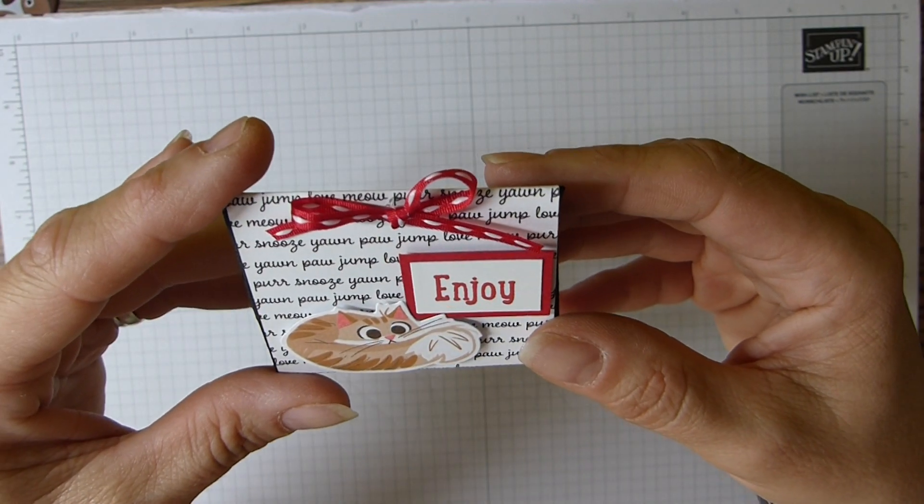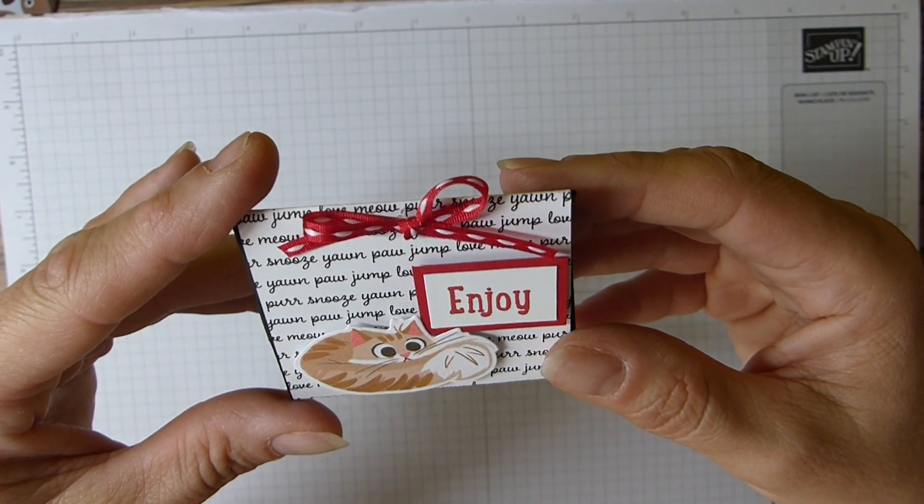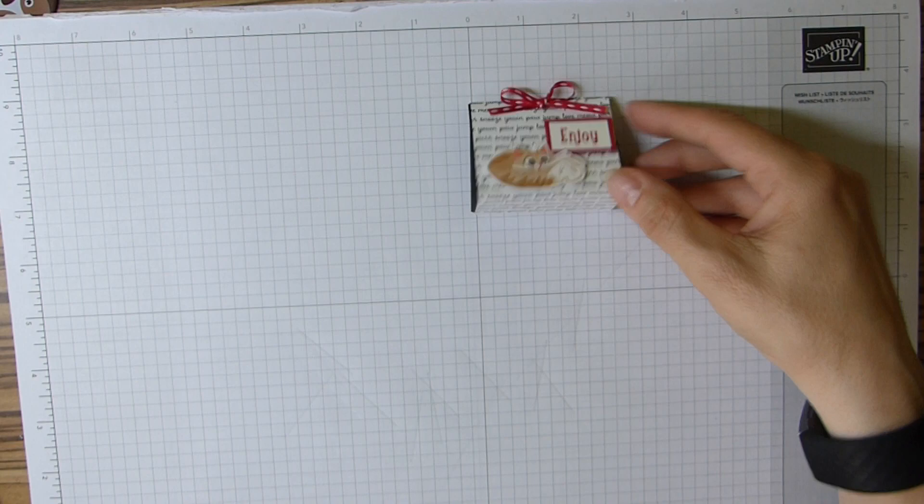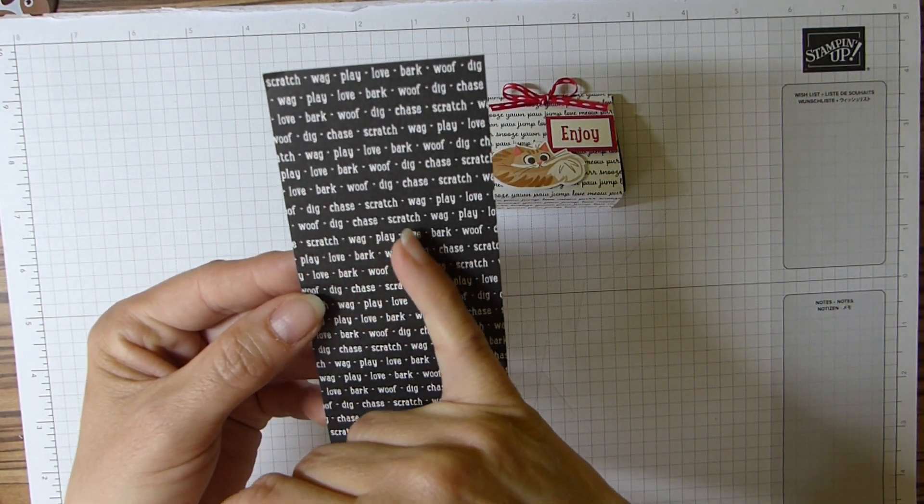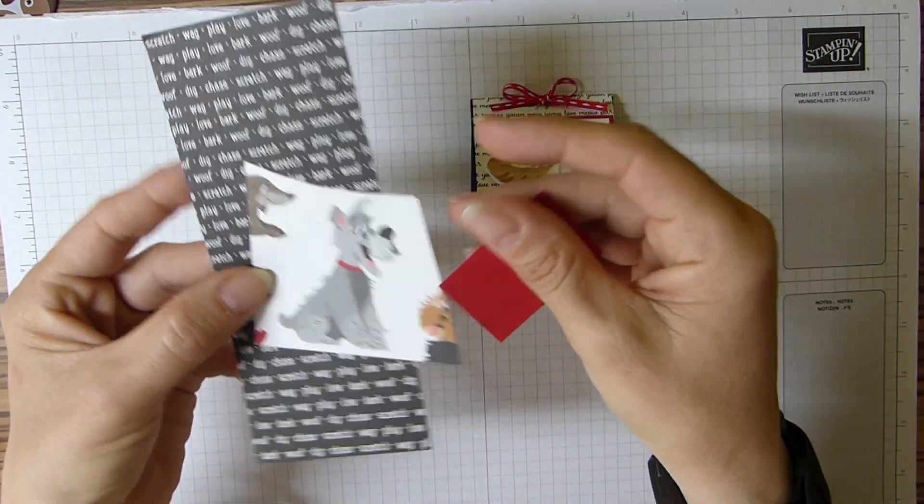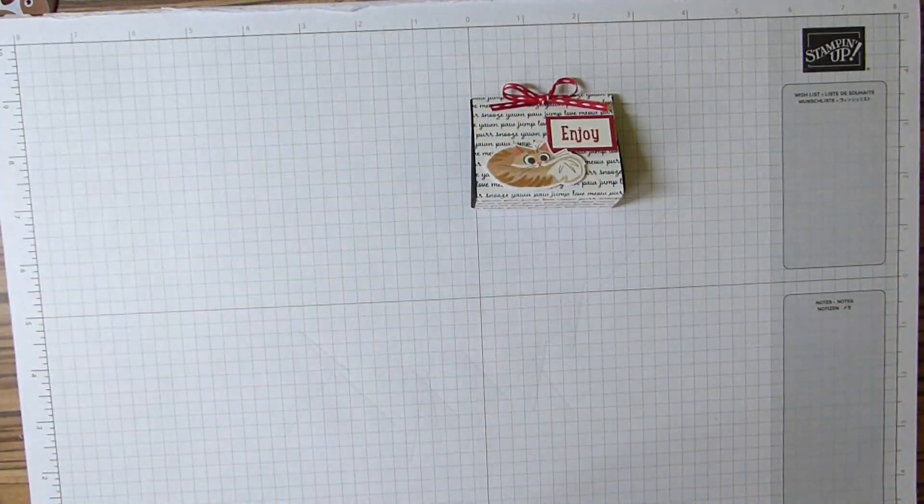Snooze, yawn, paw, jump, love, meow. It's really cute. And then the dog version is dig, chase, scratch, wag. I just think they're really cute. And I've got the little dog to go on this one too.